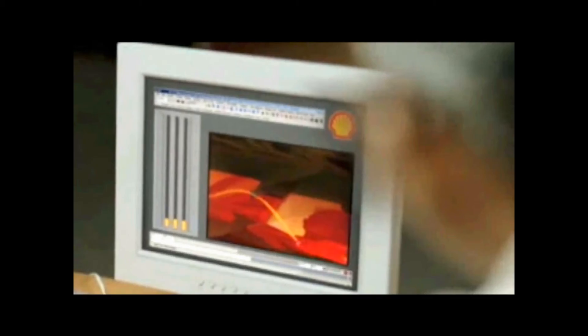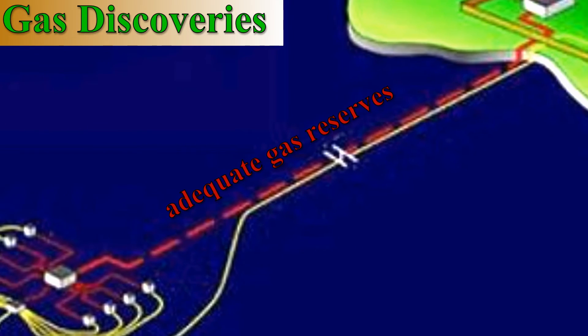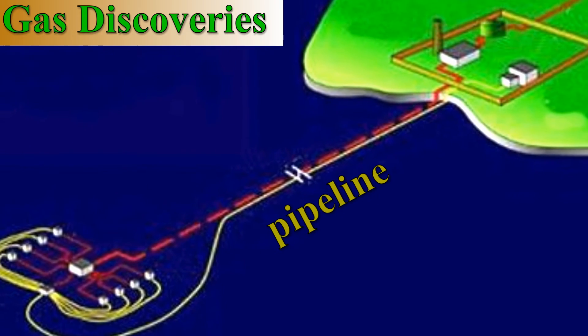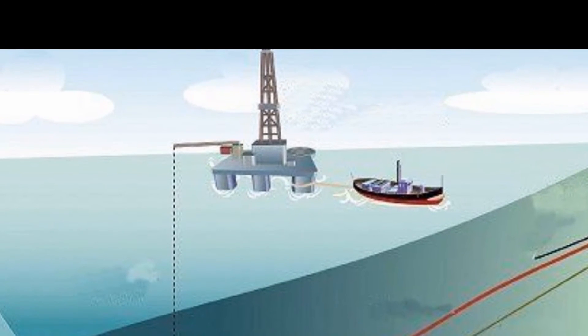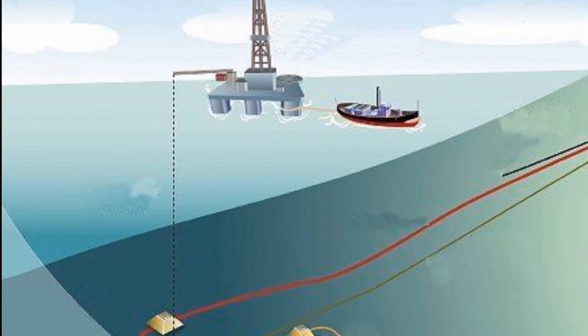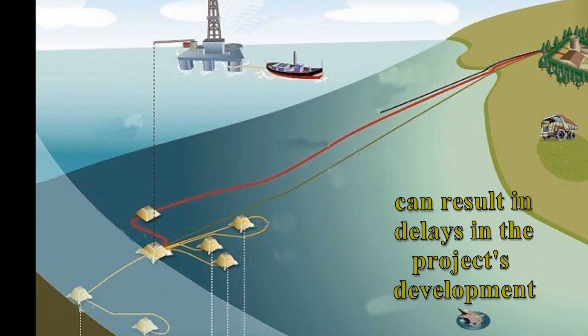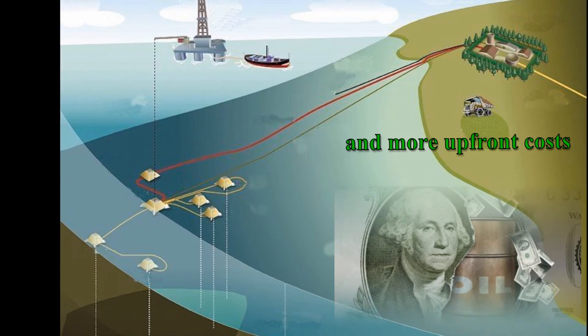Another problem with gas fields lies in the properties of this highly flammable gas and its unique requirements for retrieval and transportation. For example, if gas discoveries are made some distance from a pipeline, a number of wells have to be drilled before adequate gas reserves can be established to justify laying a pipeline into this field. For these reasons, predictions for future gas production may depend on more testing. This, coupled with the need for more complex equipment to both produce and transport this gas, can result in delays in the project's development and more upfront costs.